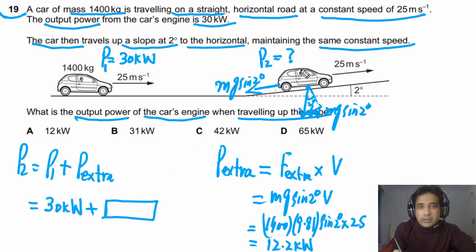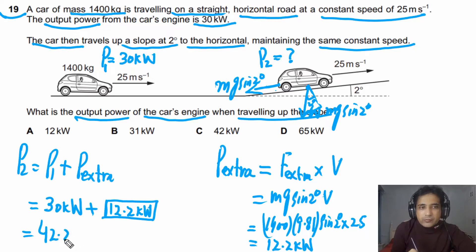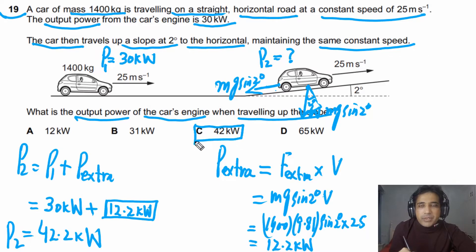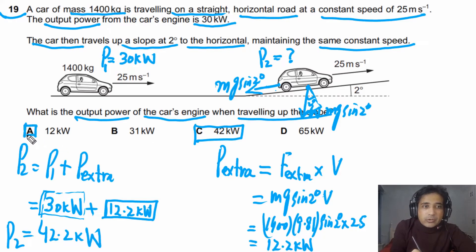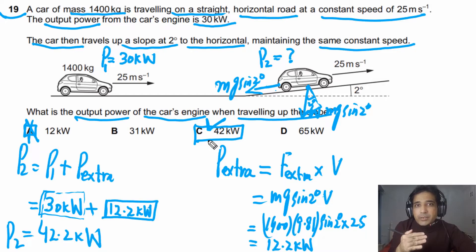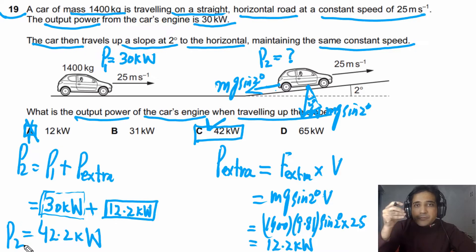The total power P2 is therefore 30 plus 12.2, which equals 42.2 kilowatts. The answer for this question is C. In the exam, most students forget to add the original power P1 — the power required when the car is moving on the horizontal road — and so they get the wrong answer. The correct approach is to calculate the extra power and add it to P1.